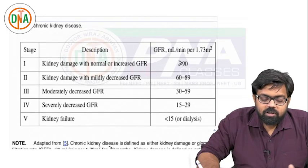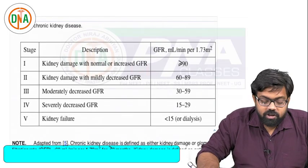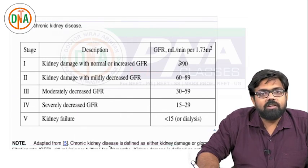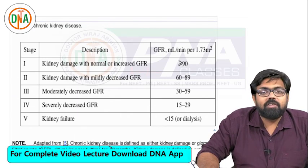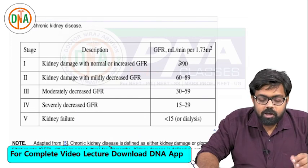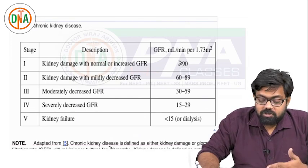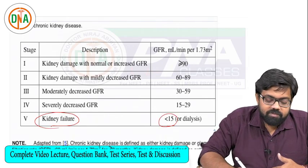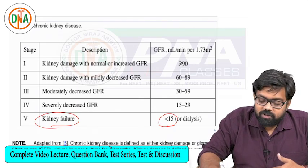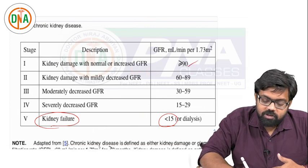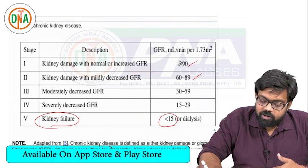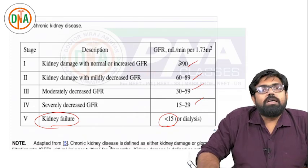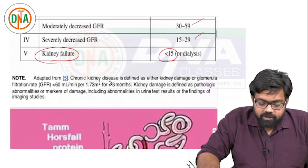The newer staging of chronic kidney disease - earlier it was decreased renal reserve, renal insufficiency, renal failure, and end-stage renal disease. Now it has been classified into stage 1 to stage 5 on the basis of GFR. Kidney failure is defined as GFR less than 15. Stage 1 is normal or increased GFR of 90 or more; then mildly decreased, moderately decreased, severely decreased, and chronic renal failure. This is the new classification of staging of chronic kidney disease.